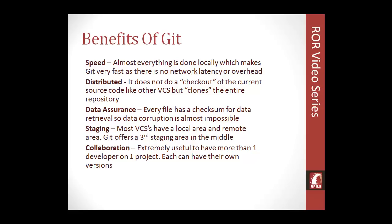Staging is another big feature. Most version control systems have just a local version and a server version, but Git has a staging area — a third area in between the local and the remote. You can make changes and send them to the staging area without actually committing to the server. The staging feature is completely optional — you can skip it by adding a hyphen-a to the Git commit command.